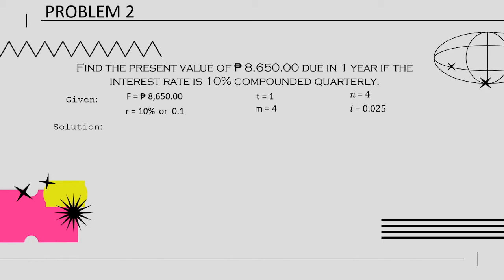In this case, we are looking for the present value, not the future value. So we are going to use another formula: P equals F times (1 plus I) to the power of negative N. Substituting everything: P equals P8,650 times (1 plus 0.025) to the power of negative 4. Computing it with a calculator, the answer is P7,836.47. The present value is P7,836.47.